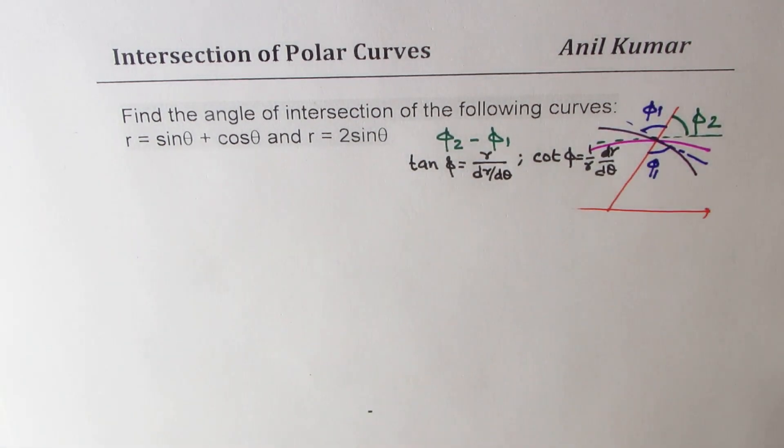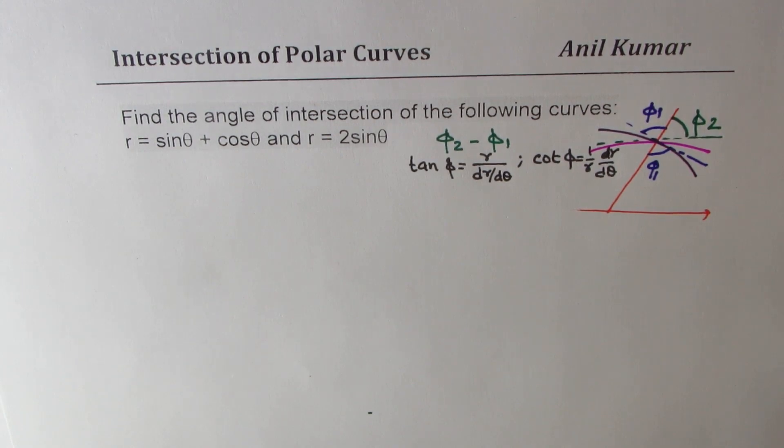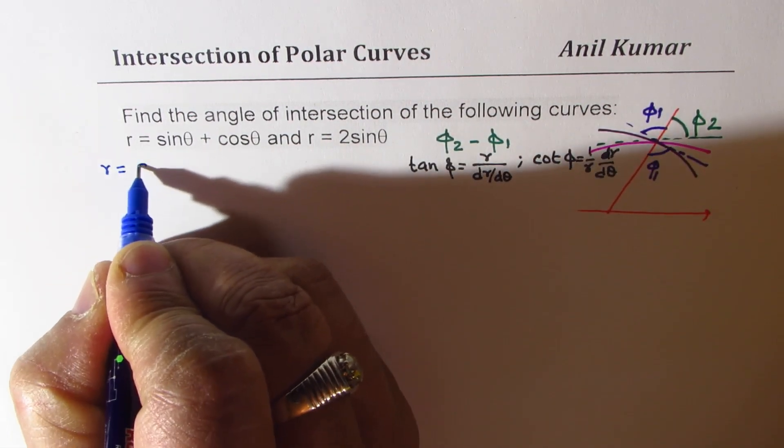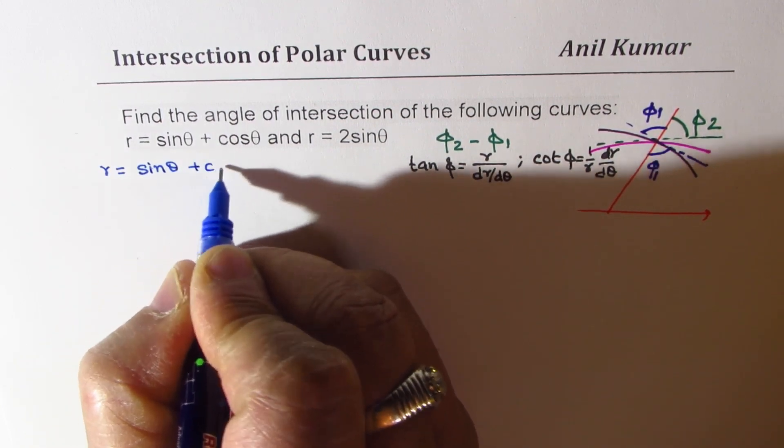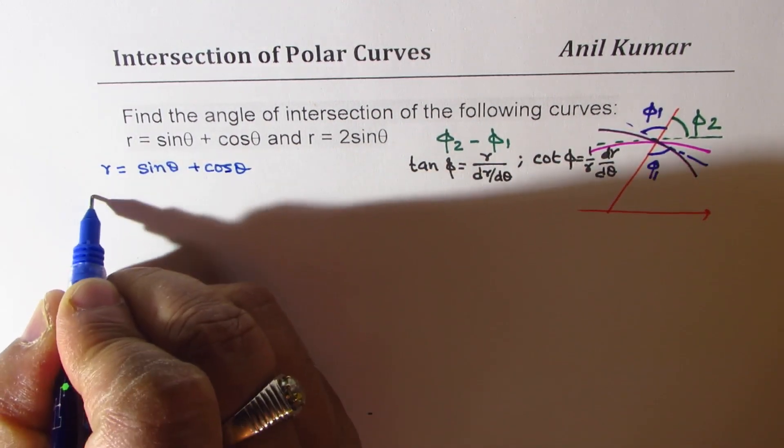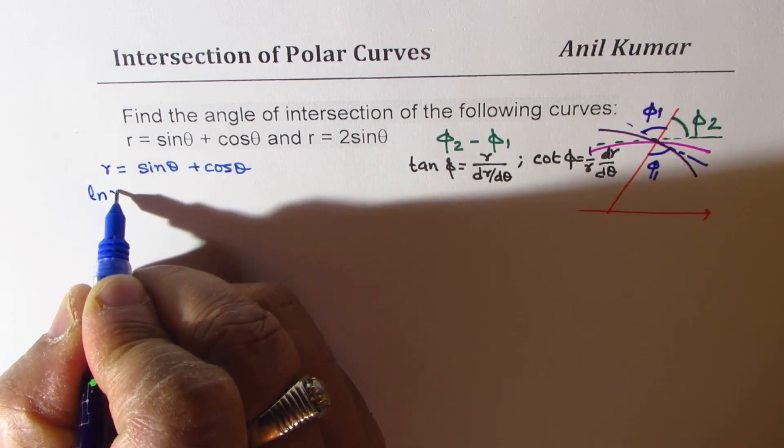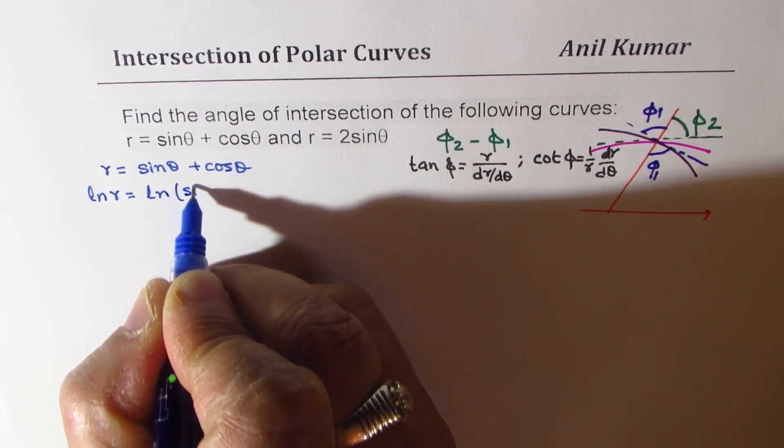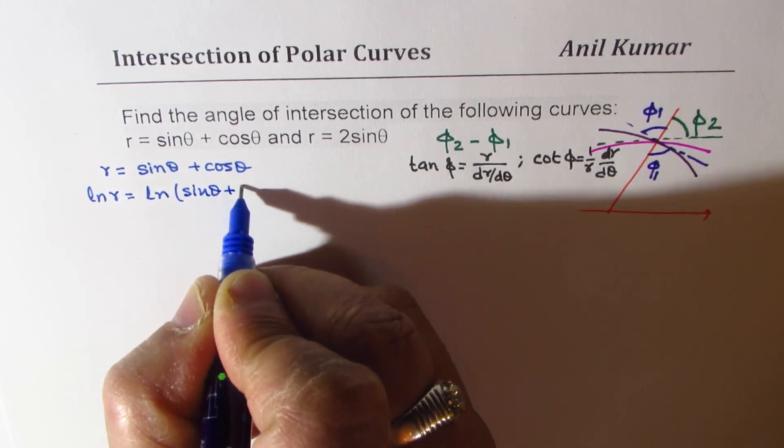So let's begin with the very first one, which is r equals sine theta plus cosine theta. Taking log both sides, natural log, ln r equals ln sine theta plus cosine theta.